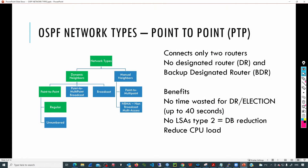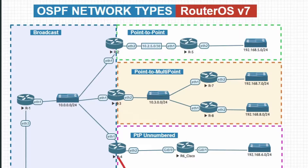The next network type to analyze is point-to-point. So what happens if we have a link where we are just expecting one neighbor? Like for example in this case R2 is connected to R5 — we are expecting just one neighbor. So this can be a point-to-point network type, and this is going to bring a lot of benefits to our topology and increase the performance.